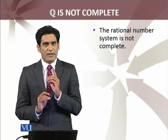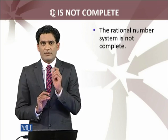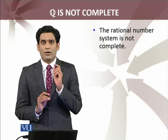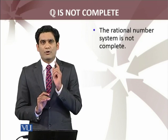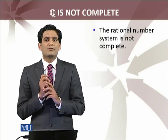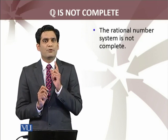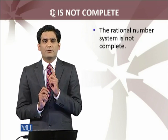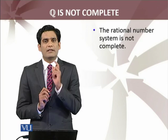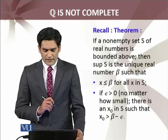So let me repeat what our target is. I have to find a set which is a subset of the set of rational numbers, is non-empty, is bounded above, and I have to show that its supremum is not any rational number.